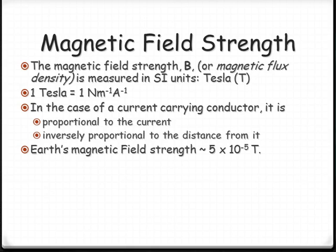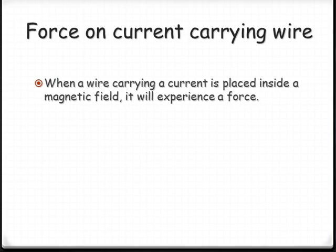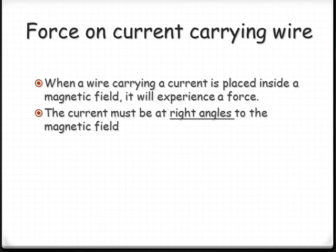So let's talk about a wire that's placed in a magnetic field. If there's a current flowing that's in a magnetic field, it will experience a force. However, it's dependent on a couple of things. Firstly, it needs to be at right angles to the magnetic field. If it's not at right angles or if it's parallel to the magnetic field, there will be no force.